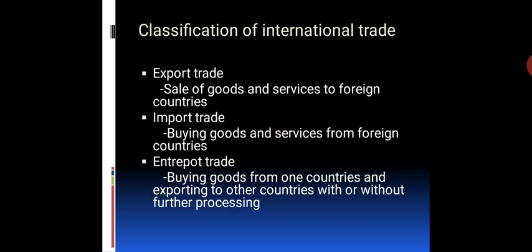Now let us discuss the classification of international trade, which includes export trade, import trade, and entrepot trade. Export trade means sale of goods and services to foreign countries. Import trade means buying goods and services from foreign countries. Entrepot trade means buying goods from one country and exporting to other countries with or without further processing.